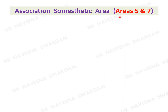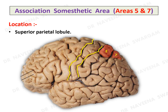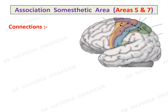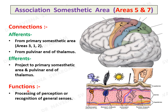Association somesthetic area, areas 5 and 7: here is the central sulcus and the postcentral sulcus. The area occupies the superior parietal lobule, which lies above the intraparietal sulcus and in front of the tip of the parieto-occipital sulcus, with area 5 in front and area 7 behind. It is connected to the primary somesthetic area (areas 3, 1, 2) and also to the pulvinar of the thalamus. Its function is recognition of general senses by processing of perception.